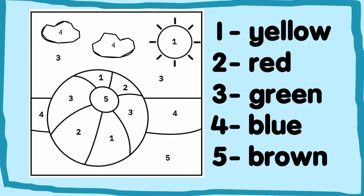Now we need to read the color words and color this picture according to the number given. So, 1 is yellow, 2 is red, 3 is green, 4 is blue, and 5 is brown.